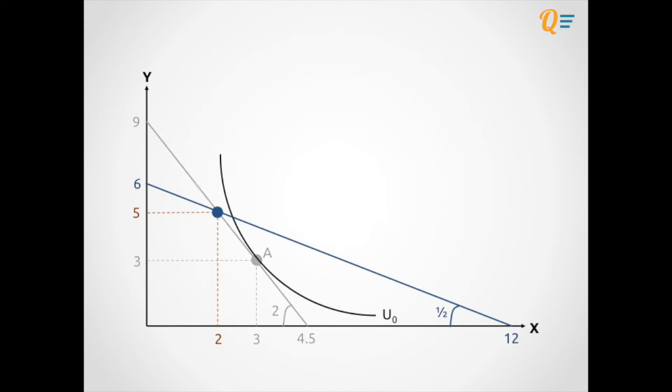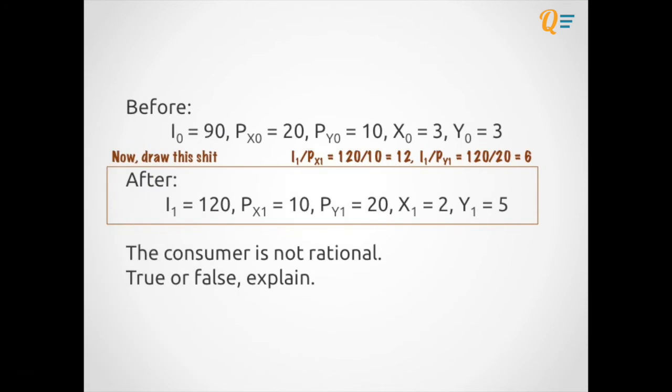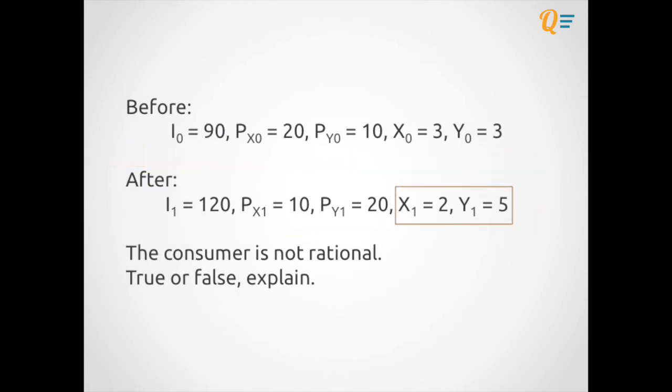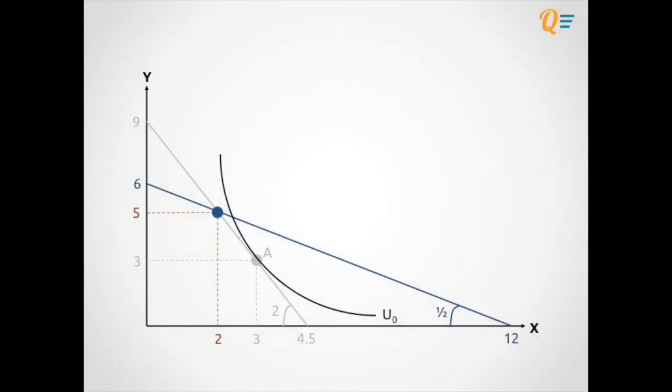Now, to figure out whether the consumer is rational or not, we need to see what his new choice of a bundle is going to be. So let's go back to the question. From the question, we can see that his new bundle of X and Y is going to be 2 and 5. Oh hey, it happens to be the point where the new and the old budget line intercept. So I'm just going to put point B over there. Okay, so this is the part where you have to pay really close attention to: by moving from point A to point B, how does the indifference curve move?